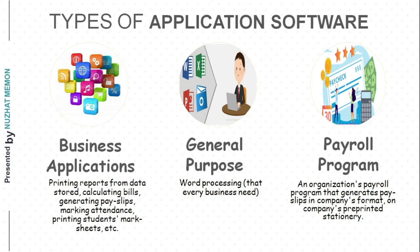The second type is general purpose software. The best example is word processing, which is used by everyone — students, teachers, researchers — and is needed by every business. Third is payroll program: an organization's payroll program generates payslips in the company's format on the company's pre-printed stationery, as every company has its own unique format.